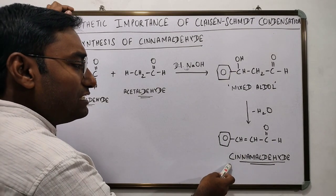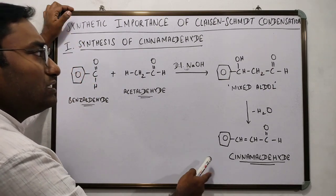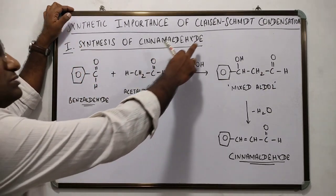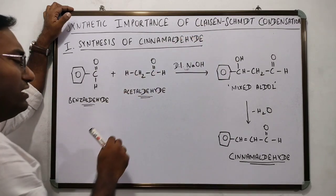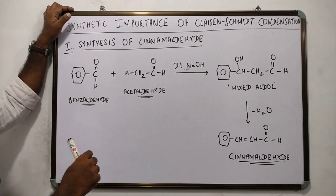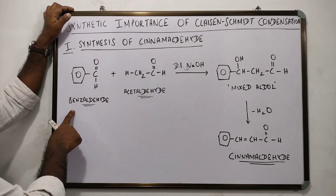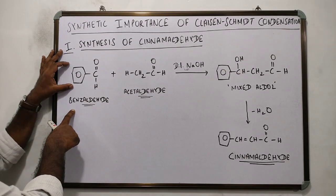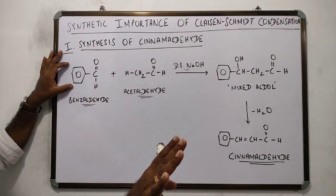How do we prepare cinnamaldehyde? For this, you will have to go for Claisen-Schmidt condensation, wherein you react benzaldehyde, which is an aromatic aldehyde with no alpha hydrogen atom.